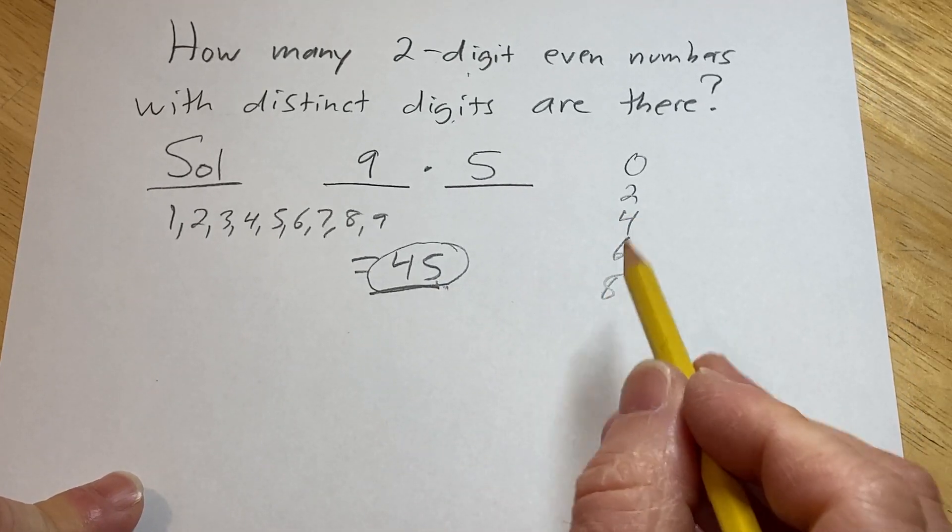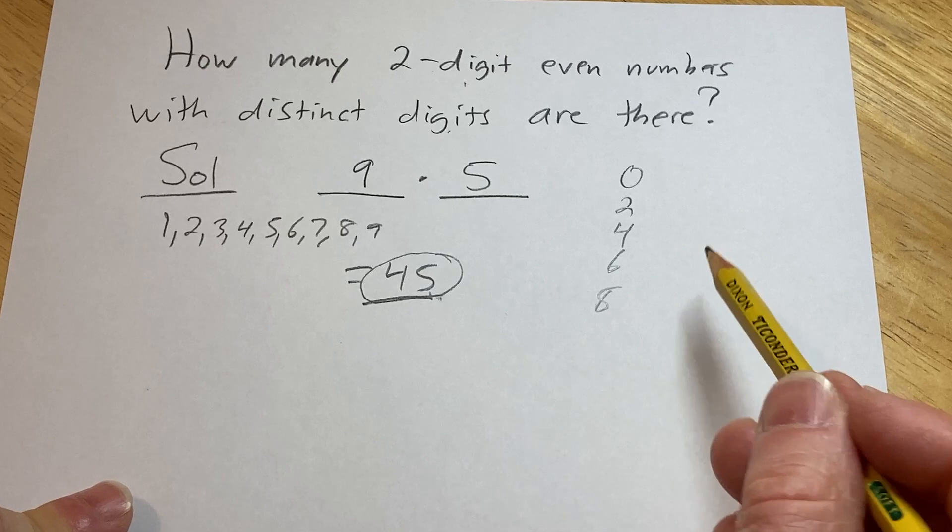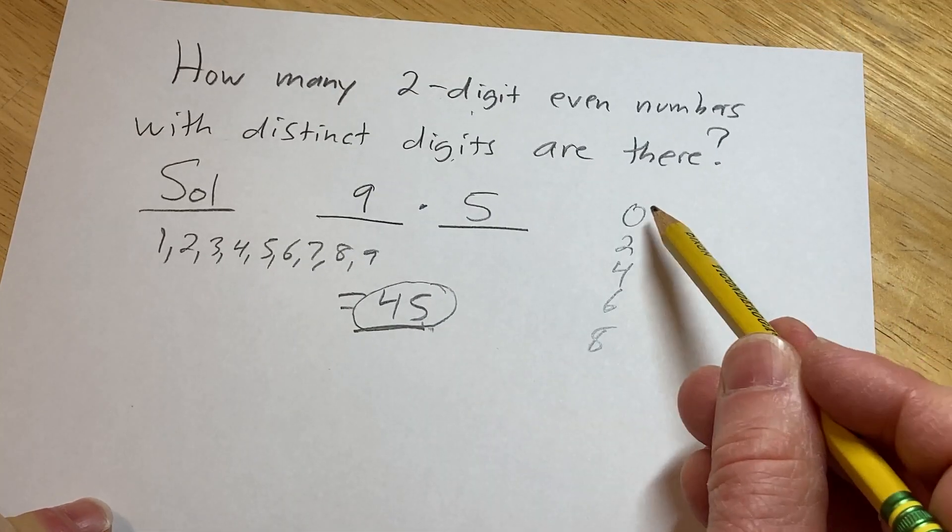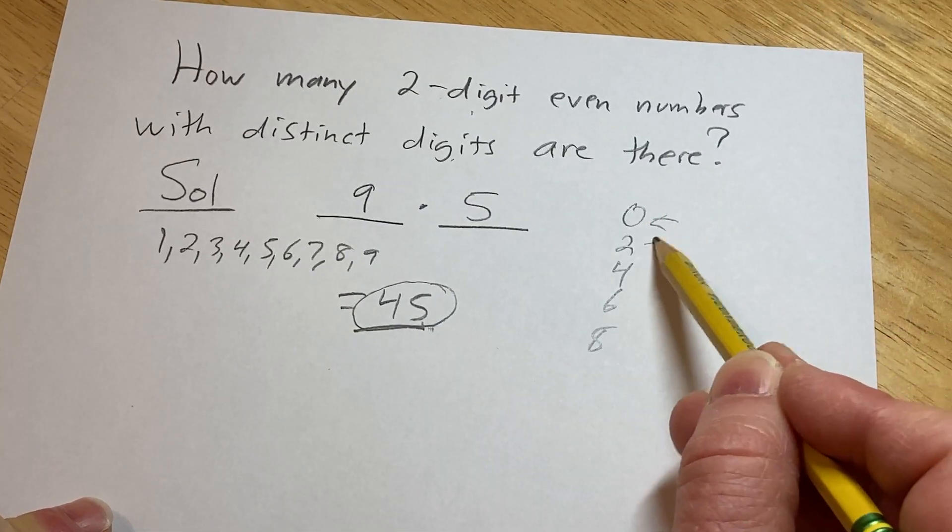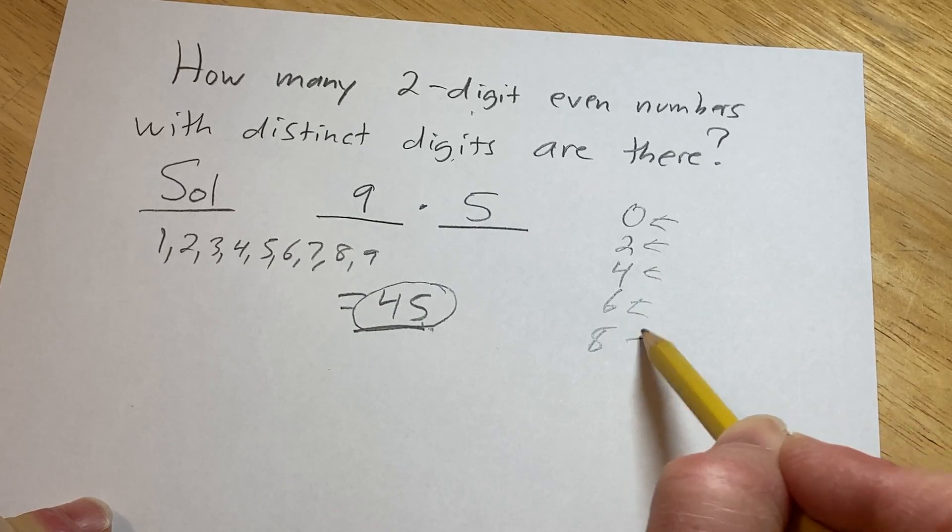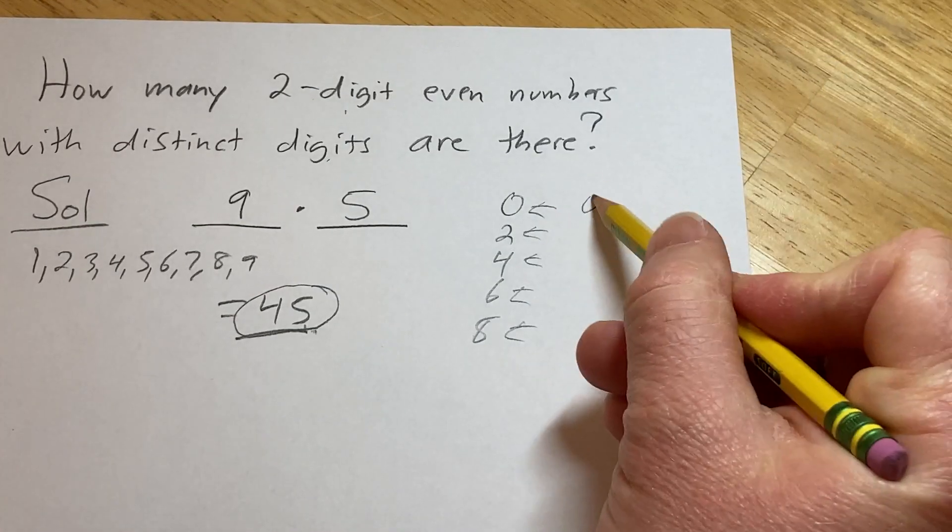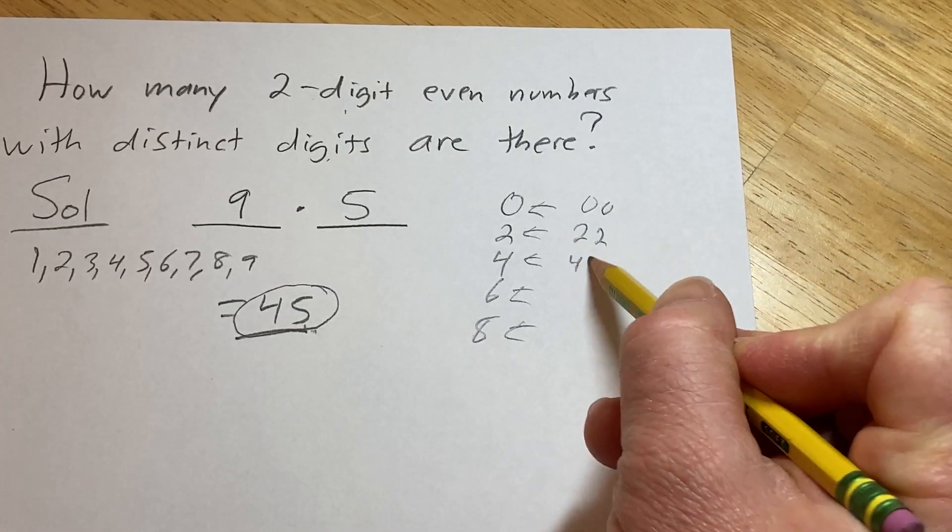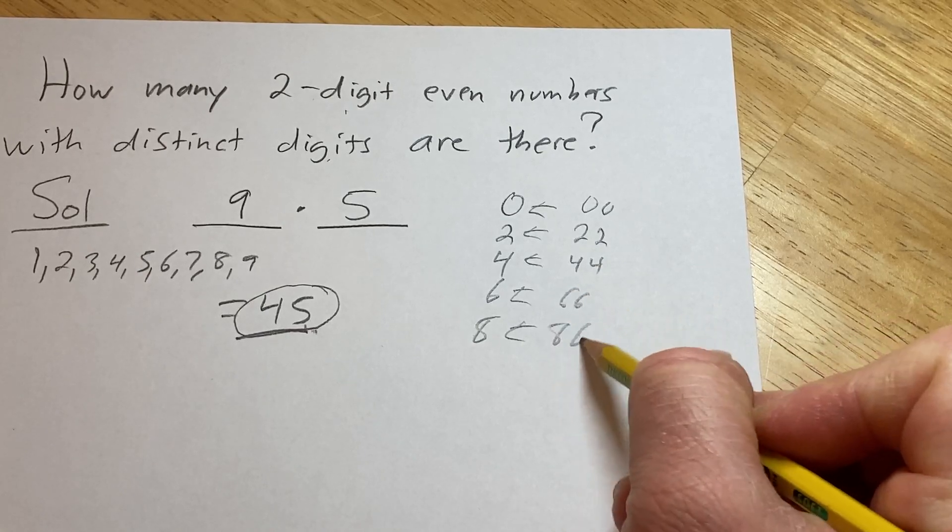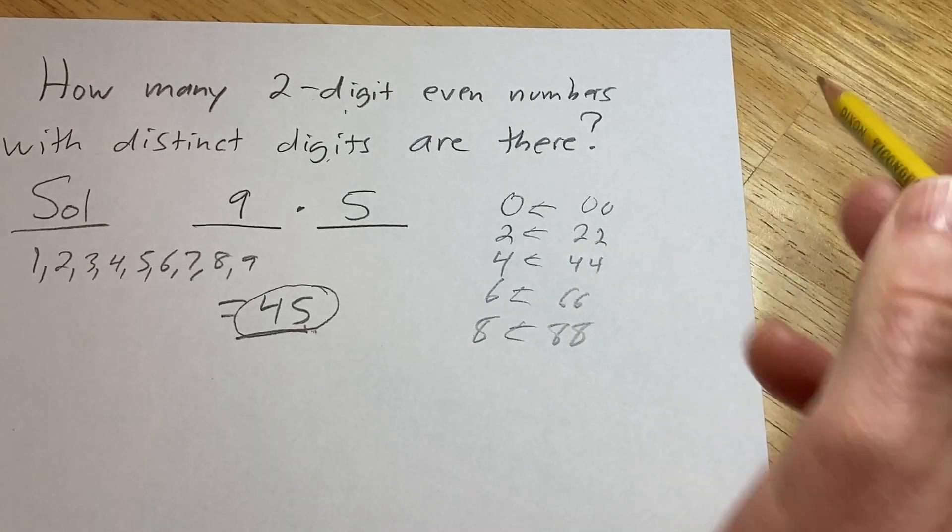So if it doesn't have a distinct digit, that means the digits have to be the same. So we know that an even number has to end in these. So if we just blindly write these down, we would get 00, 22, 44, 66, 88. Except 00 isn't really a number.